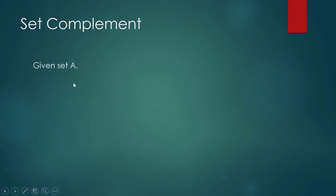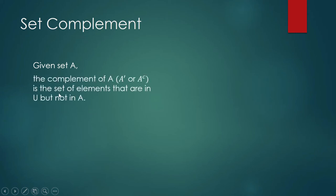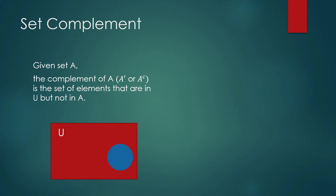Set complement — pay attention to the spelling, it's 'complement,' not 'complete.' Given a set A, the complement of A, written as A-prime or A-complement, is the set of elements that are in the universal set but are not in set A.